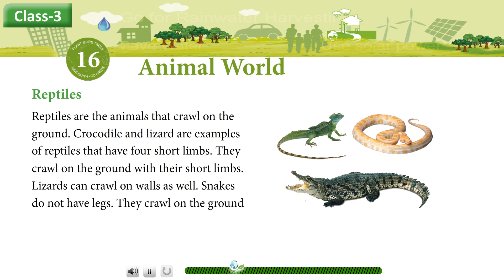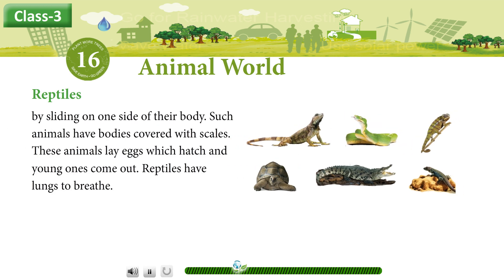Snakes do not have legs. They crawl on the ground by sliding on one side of their body. Such animals have bodies covered with scales. These animals lay eggs which hatch and young ones come out. Reptiles have lungs to breathe.